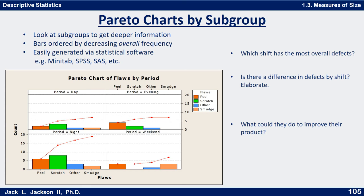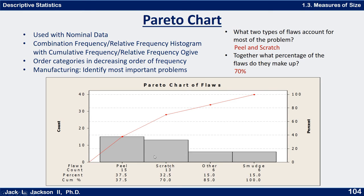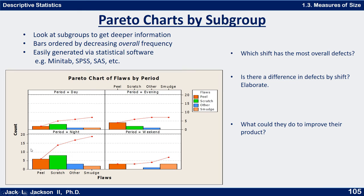So we have the day shift, the evening shift, the night shift, and the weekend shift — four different groups of people. When you break it down into subcategories, the bars are not in decreasing order for each individual category, but rather in the same overall decreasing order as before, so all of them will have peel first and then scratch.